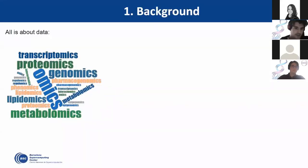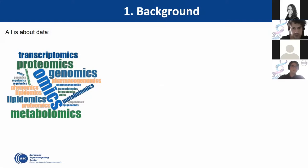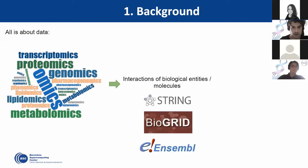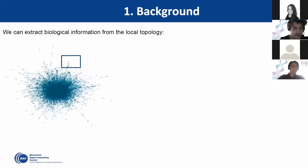Omics technology is producing a lot of different kinds of data, including interactions of biological entities and molecules. The way we use this kind of data is by modeling it as networks. In a network, each molecule is represented as a node and its interactions are represented as edges. The good point about these representations is that we can extract biological information from recurring patterns of the networks.